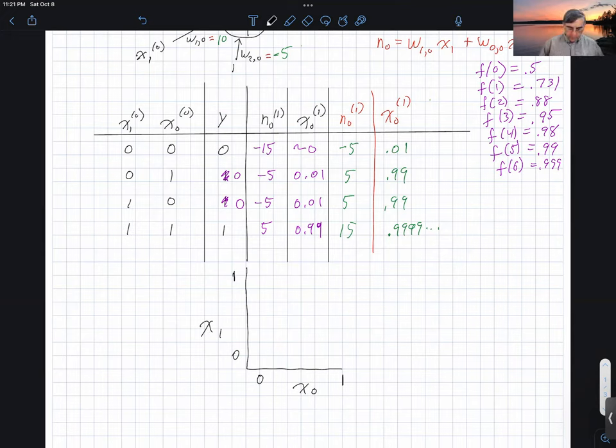So the very first row here corresponds to this point right here. And what we've expressed in this Y column here is that we want the output to be a 0. The next row down, that corresponds to this point right here. We also have a desired value of 0 here. And the third row is this point right here, which has a desired value of 0. And then finally, the last row, we have a desired output of 1.